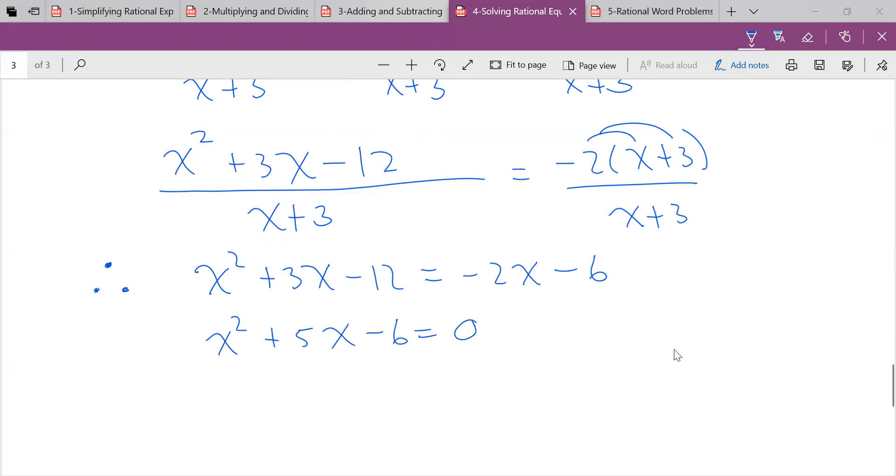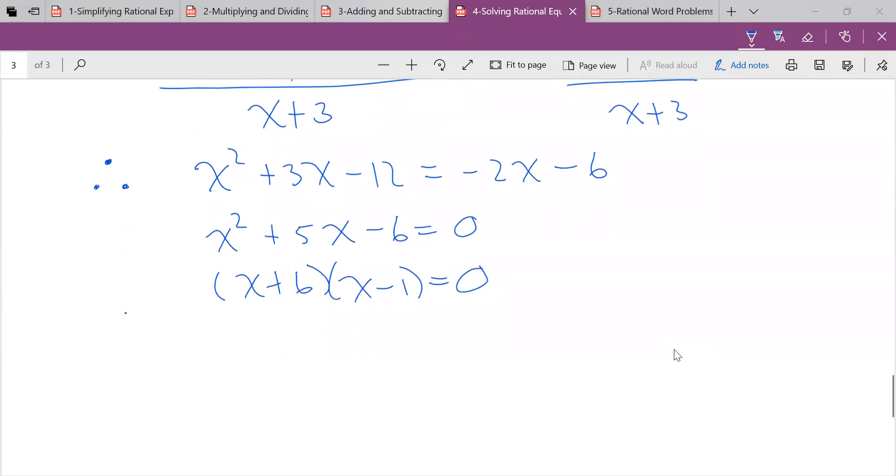There we go. It's trinomial. Oh, guess what? More factoring, right? What are we going to get here? X plus 6 times X minus 1 is equal to 0. Keep solving. So we use the zero product property. So therefore X is equal to negative 6, X is equal to 1.